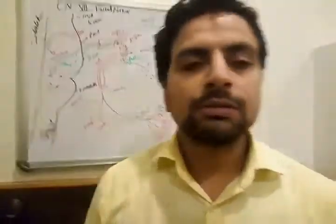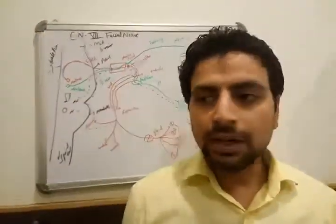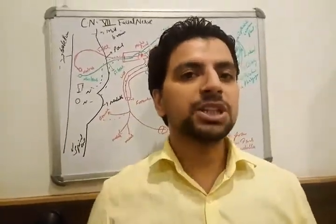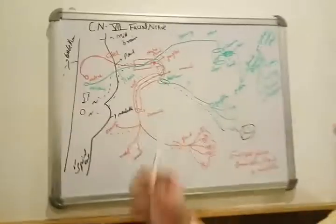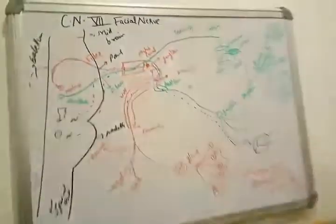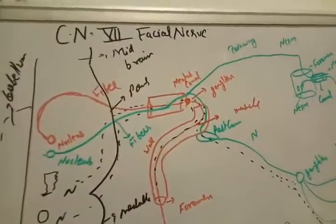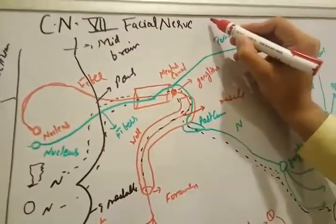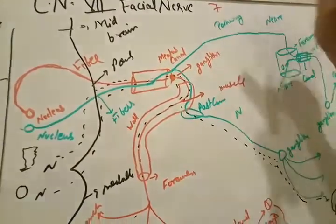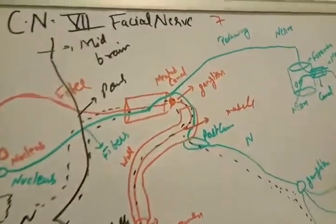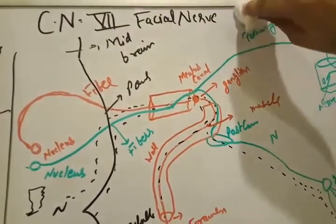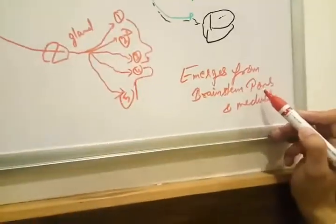Good evening doctors, myself Dr. Himant Sharma. Today I worked hard — I gave 6 days — and finally I prepared a topic about the facial nerve. I am going to explain cranial nerve 7. To remember it: if you write 'F' and turn it around, it looks like a 7. So remember this 'F' with facial nerve 7.